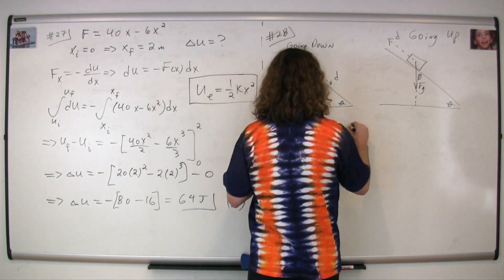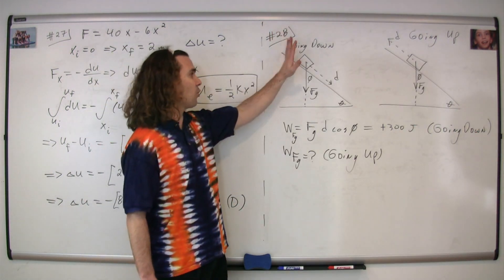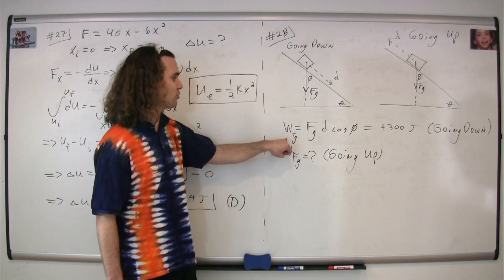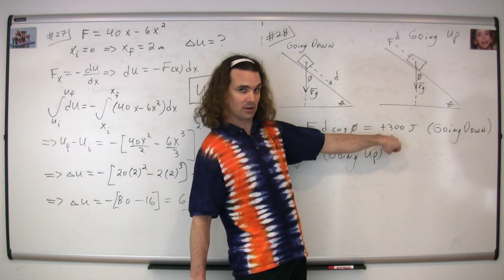In question 28, we have a block going down an incline, a total displacement d, and the work done by the force of gravity as it goes down the incline is positive 300 joules.